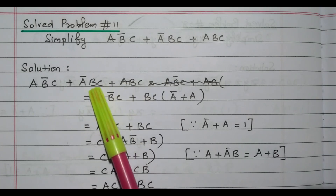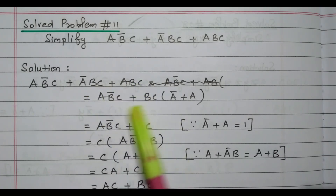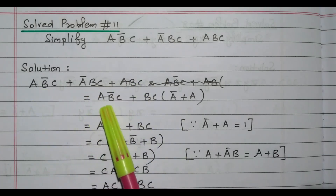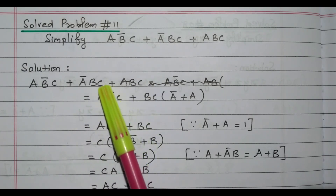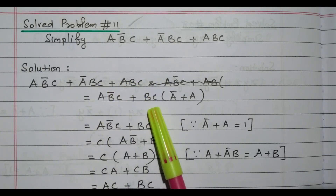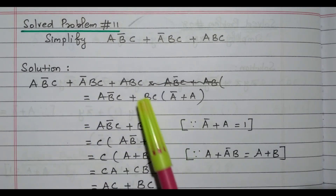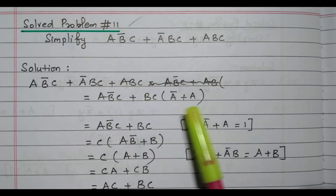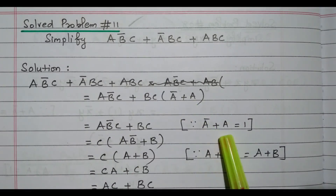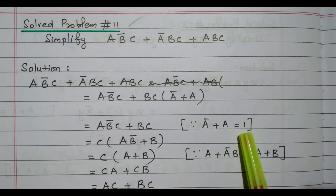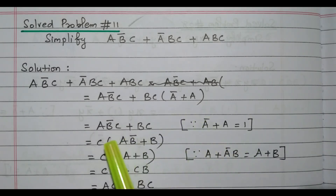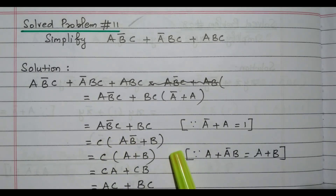Looking at the second and third terms, bc is available commonly in both. So we take bc outside from those two terms: remaining term from ābc is ā, and from abc is a. So we have abc̄ + bc(ā + a). What is ā + a? ā + a equals 1. So this term becomes 1, giving us abc̄ + bc.